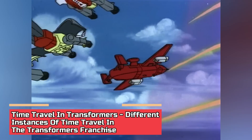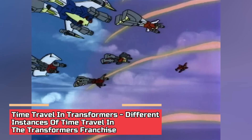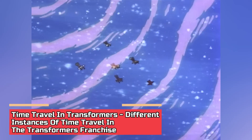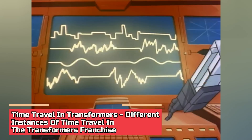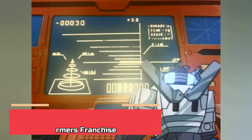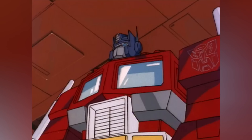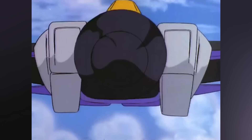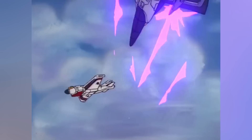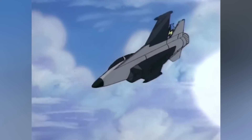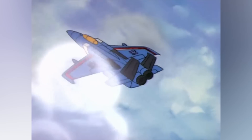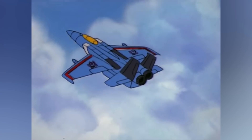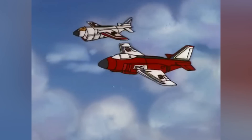Time travel was used several times in Transformers storylines from different continuities. They showcased individuals and groups moving forward and backward in time, hoping to destroy their enemies or to save their past. They used time jump mechanisms, transwarp devices, or substances such as Ore-1 and Chronogong.